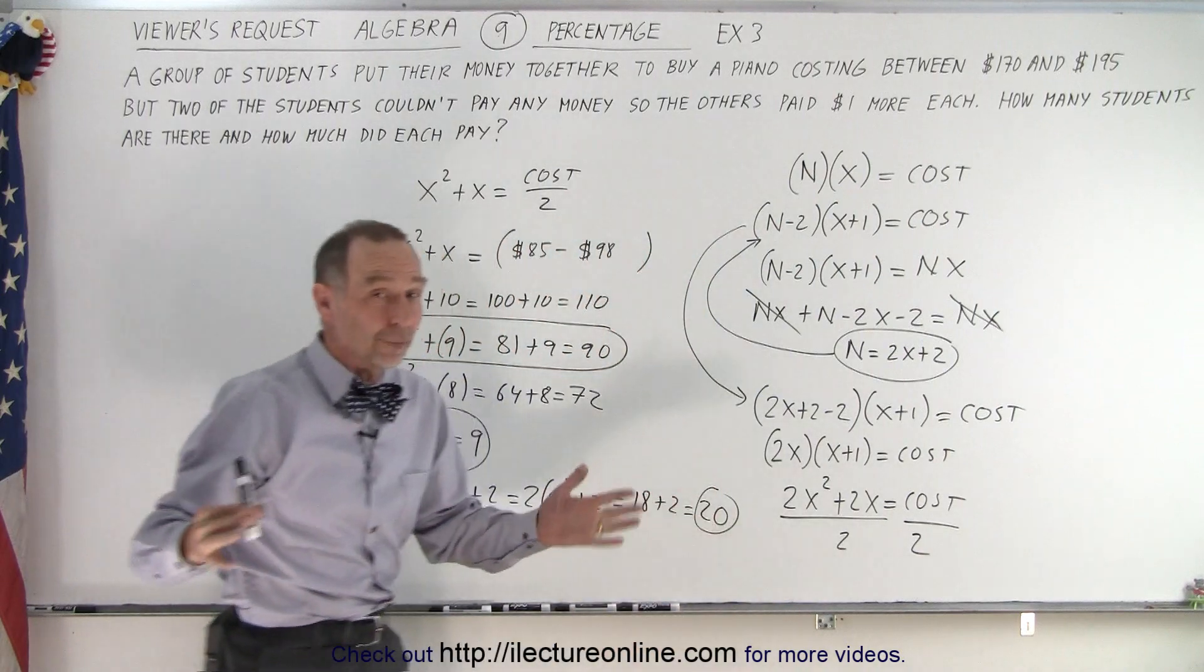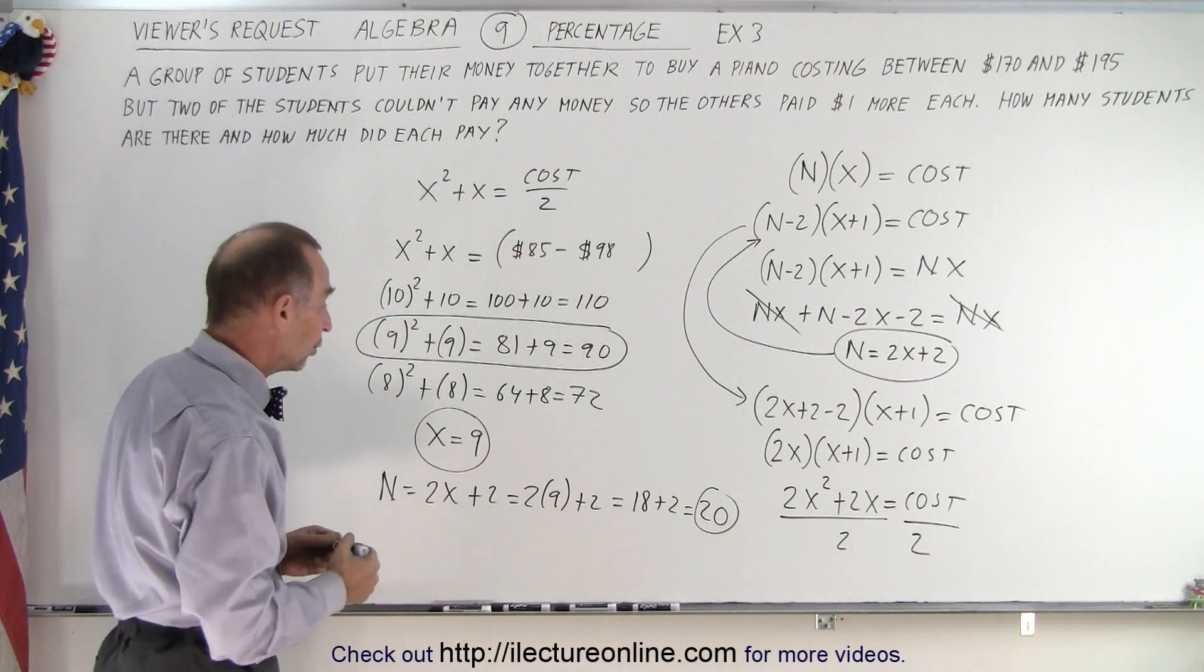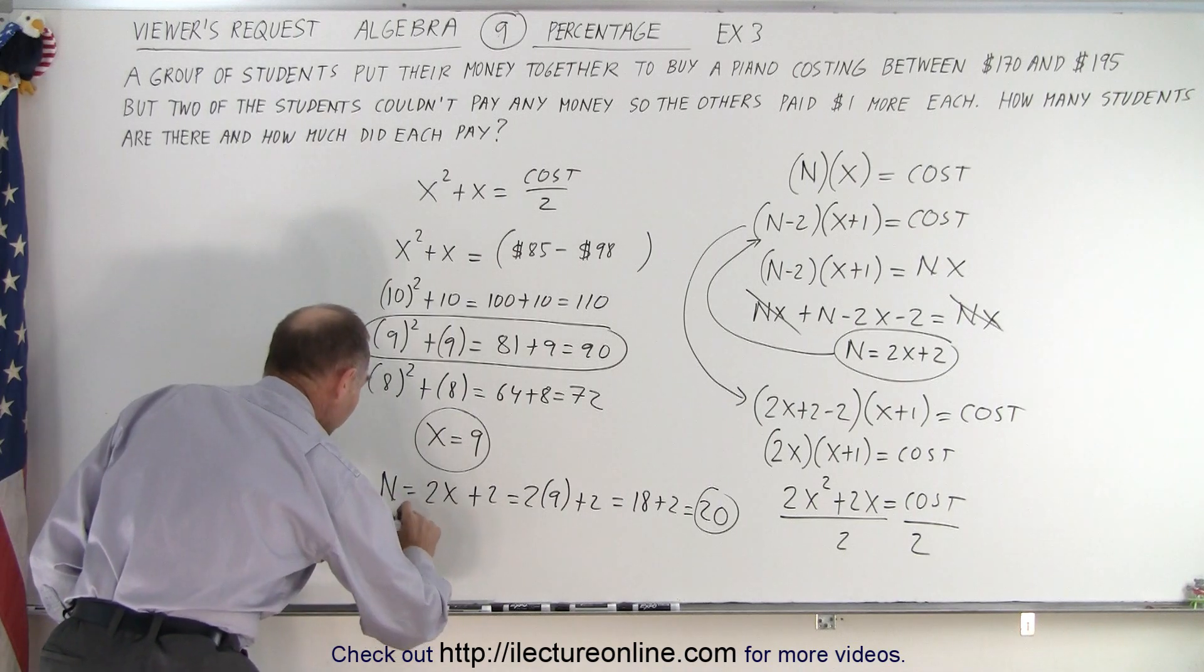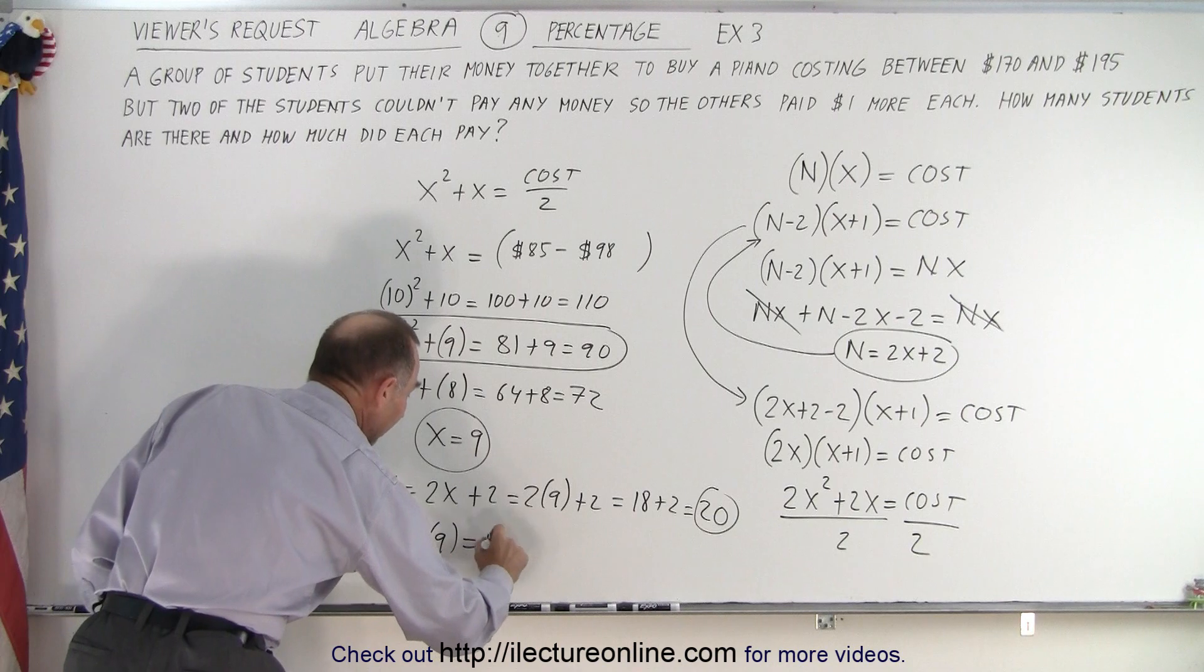That would then add up to $180 to buy the piano. So that means that the original cost of the piano would be $180 and there were 20 students each paying $9. So we have 20 times 9 equals 180.